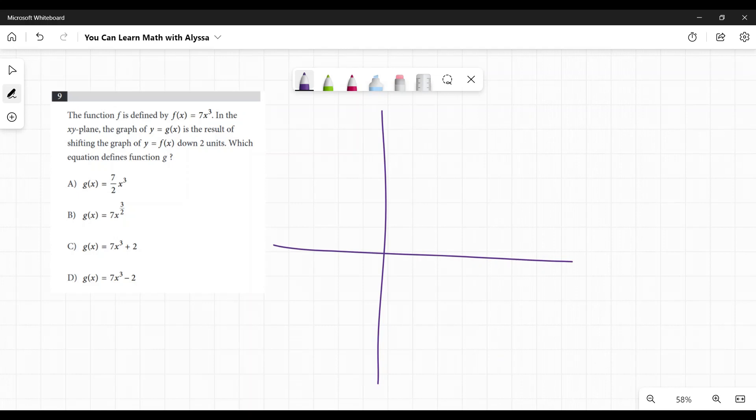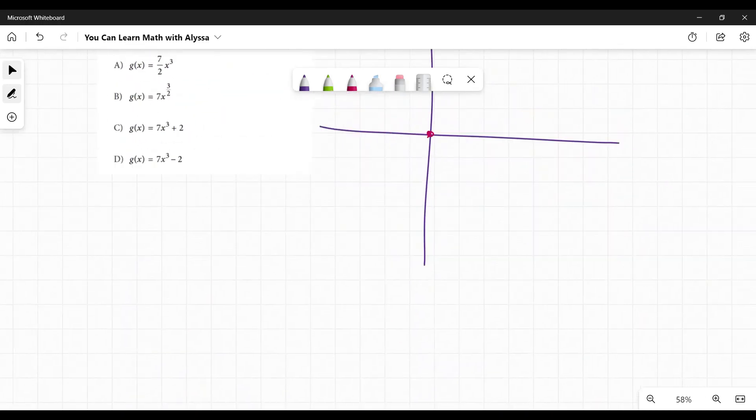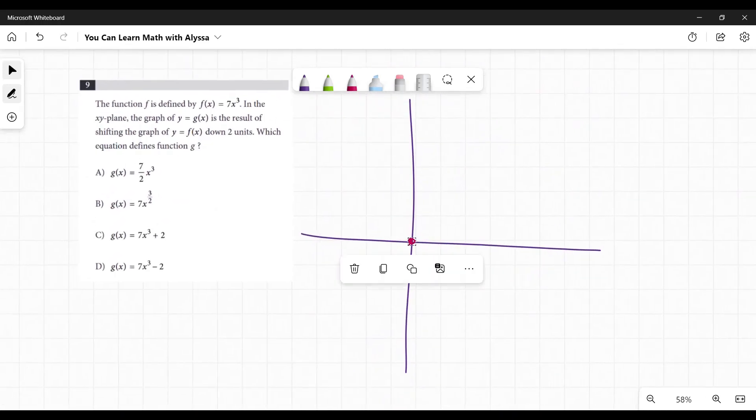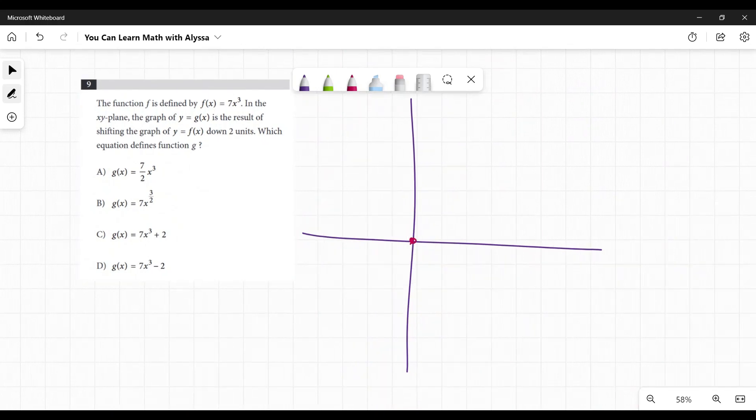I'm not drawing this to scale, but 7x³ is going to be a cubic. Cubics are ones that go like this, or they can go up and down like that. 7x³ is going to be a cubic that goes right through the origin. It's going to be really steep and decided it doesn't like my stylus.